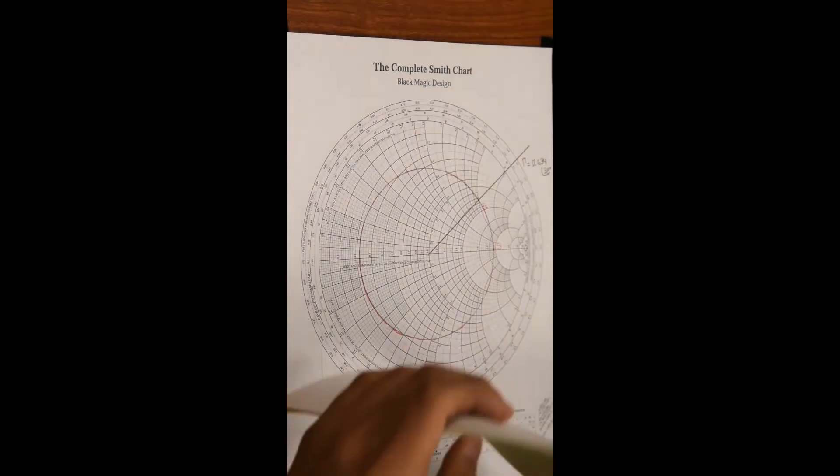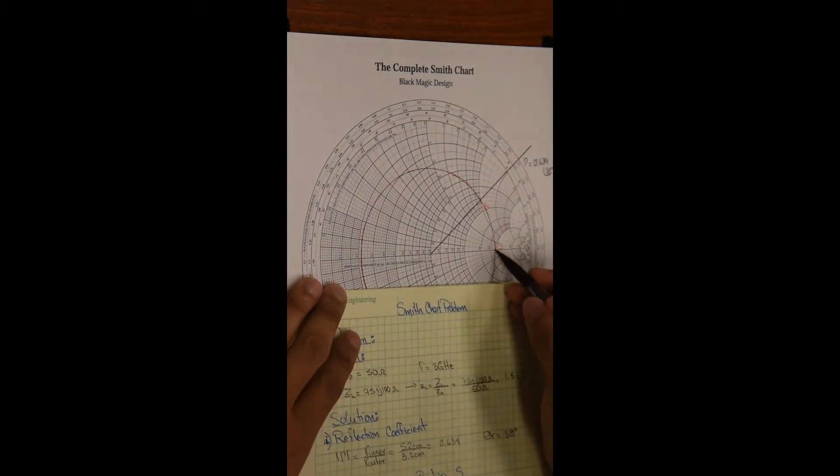Again, the standing wave ratio will be read directly from the Smith chart as 4.6.